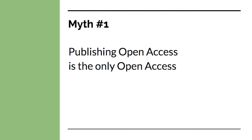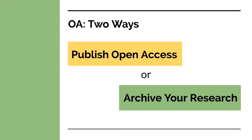The first myth is that publishing open access is the only open access. This isn't true. You can do open access in two ways: either by publishing in open access journals or archiving your research. Publishing open access is sometimes called gold open access and archiving is called green open access. Archiving your research allows you to be an open researcher while maintaining your current publishing practices, which can help you if you need to meet expectations to publish or there are not yet open access journals in your research area.